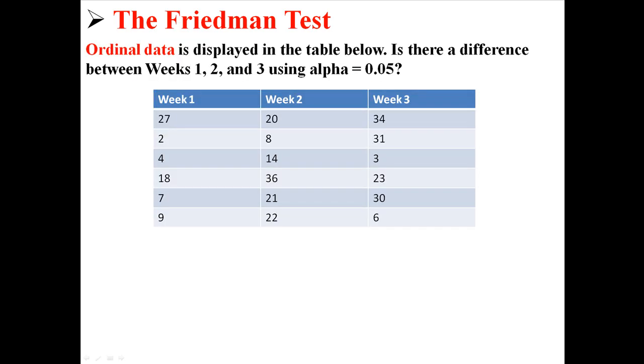So here's some ordinal data displayed in a table. Is there any difference between weeks 1, 2, and 3 using alpha .05? Now remember, this is kind of like repeated measures ANOVA, because here we have 6 subjects and we're measuring them 3 times: week 1, week 2, and week 3.